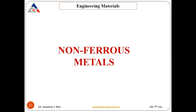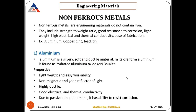After the ferrous materials, we have non-ferrous materials — those that do not contain iron. Their properties include a good strength-to-weight ratio, good resistance to corrosion, lighter weight, high electrical and thermal conductivity, and they are easily fabricated. Examples include aluminum, copper, zinc, lead, tin — all these are non-ferrous materials.